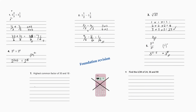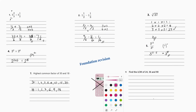Next: the highest common factor of 30 and 18. To find the HCF, write down the factors of each number. For 30: one, two, three, five, six, ten, fifteen, thirty. For 18: one, two, three, six, nine, eighteen. Now we look for the highest common factor — the answer is six.